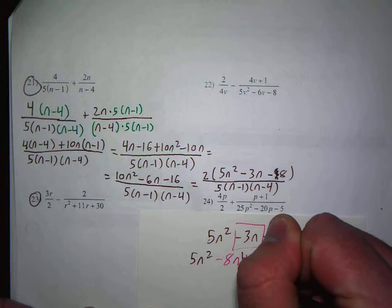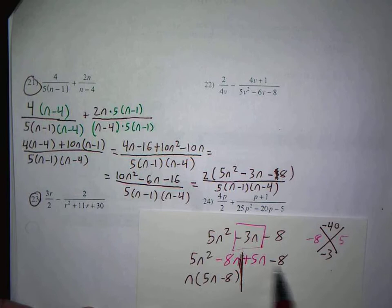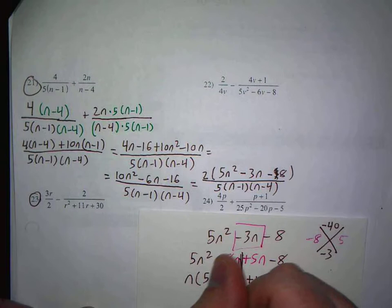And over here, the GCF is just n, leaving 5n minus 8. Over here, there is nothing in common except 1, so you factor out a 1, leaving 5n minus 8. So you get (5n minus 8)(n plus 1).